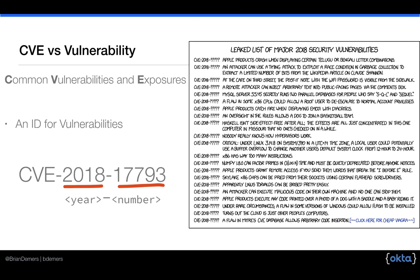A CVE is a basic way of describing a vulnerability across multiple data sources. I like to think of them mostly as an ID with some metadata attached, like an affected product, a version, and a description. These IDs are assigned by a numbering authority such as MITRE. Most of the time we refer to a vulnerability by this ID, because not all vulnerabilities get a cool name like Heartbleed.